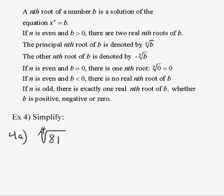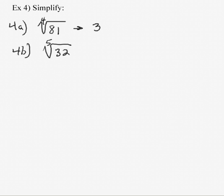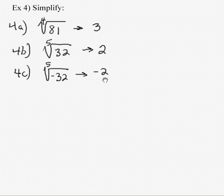To simplify: what times itself 4 times is 81? The answer is 3, since 3 times 3 is 9, times 3 is 27, times 3 is 81. The 5th root of 32: what times itself 5 times is 32? The answer is 2 — 2, 4, 8, 16, 32. The 5th root of negative 32 is negative 2, because when you have an odd number of negatives multiplied together, your answer will be negative. The 17th root of negative 1: what times itself 17 times is negative 1? That's negative 1 — again, an odd number of negatives gives a negative result.